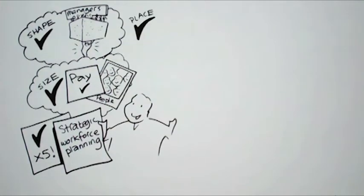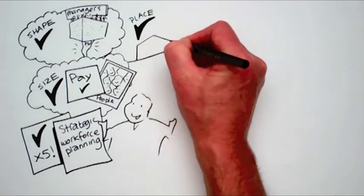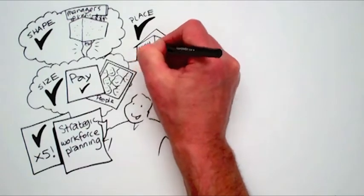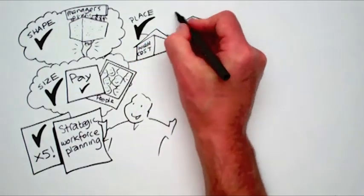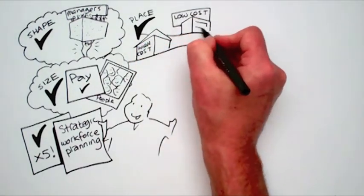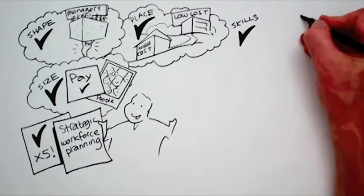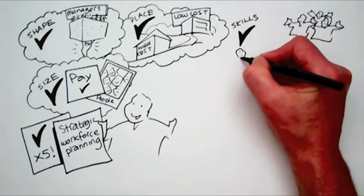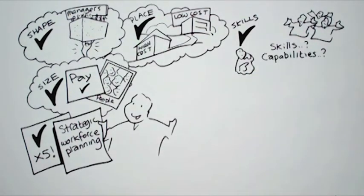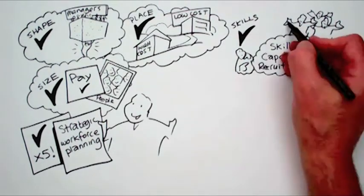Third, right place. Your manufacturing is in a relatively high cost area, but your biggest competitors base theirs in lower cost locations. Should you be thinking about moving? Fourth, right skills. Maybe you've got the right number of people, but do they have the right skills and capabilities? Are your recruitment policies right?